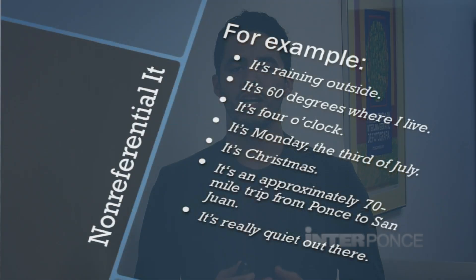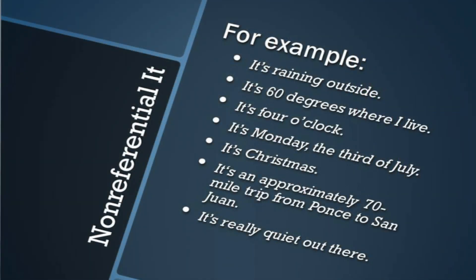Let's see some examples. 'It's raining outside' — that refers to the weather. 'It's 60 degrees' — that refers to the temperature. 'It's 4 o'clock' — that's a time. 'It's Monday, 3rd of July' — that's a day. 'It's Christmas' — a holiday. 'It's an approximately 70-mile trip from Ponce to San Juan' — that explains the distance. 'It's really quiet outside' — that's the environment.